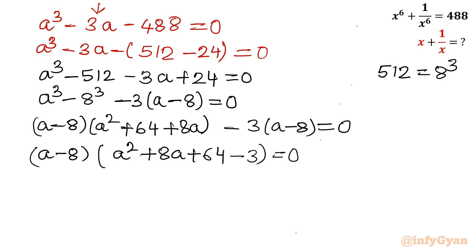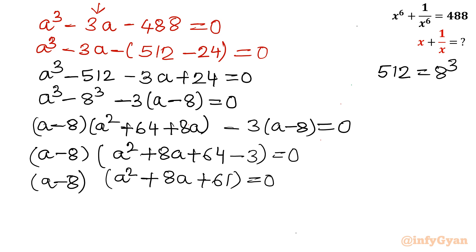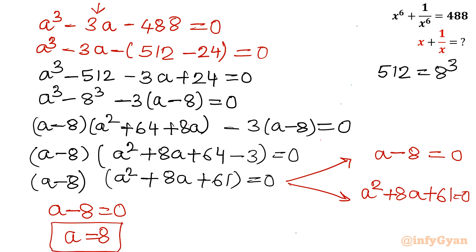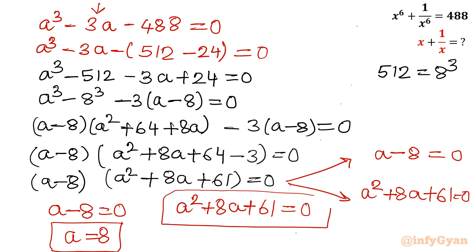From the factored form we get two cases: either a − 8 = 0 or a² + 8a + 61 = 0. Let us examine the quadratic a² + 8a + 61 = 0 to check whether it has real solutions.